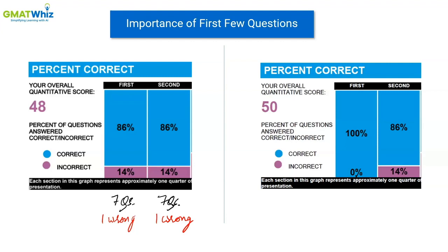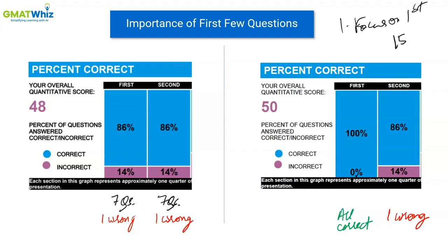Now let's look at the ESR report of the second student — this is my ESR report, by the way. In this case, the student did not get anything wrong in the first quarter, so the first quarter was all correct, and in the second quarter I got one question wrong. This is my first tip: the first 15 questions on GMAT are very, very critical.